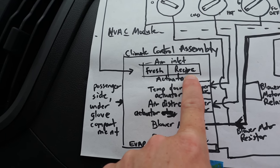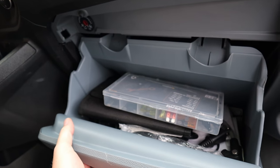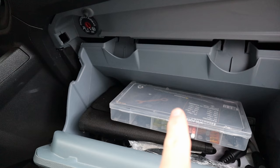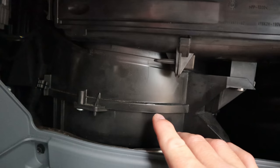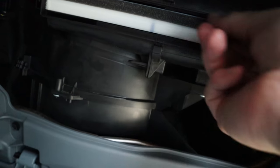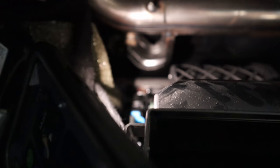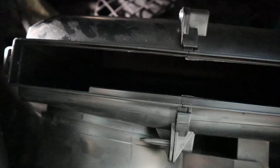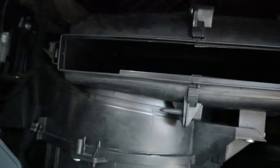If we drop the glove compartment and release these two tabs, we can get to the climate control assembly. This entire black housing includes the fan motor, the evaporator core, the heater core, and the air filter housing. If you remove the air filter, you can see the inlet duct going up through the hood. There's a motor on the side — where that blue connector is — that's the motor for the recirc control.